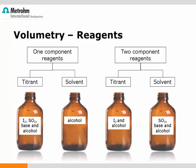There are possible choices concerning Karl Fischer reagents. On the left are the one-component reagents — one component because the titrant contains all required ingredients for Karl Fischer titration; the solvent consists of only the alcohol, in most cases methanol. The two-component reagents, on the other hand, contain the ingredients divided into two bottles: the titrant contains iodine and alcohol, whereas the solvent contains sulfur dioxide and the base dissolved in an alcohol.